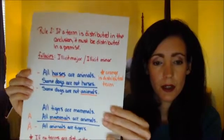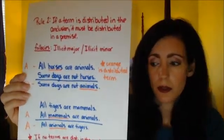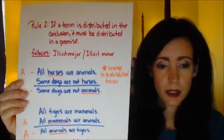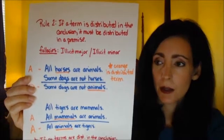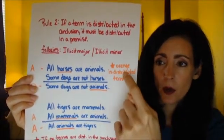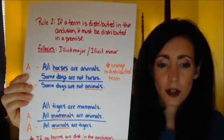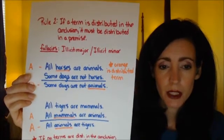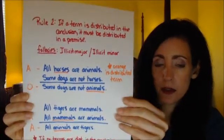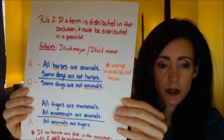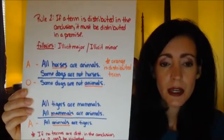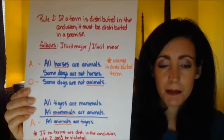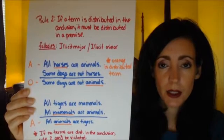Now for rule number two. Note that orange marks the term that is supposed to be distributed, to make it easier to see. Rule two: if a term is distributed in the conclusion, it must be distributed in the premise.